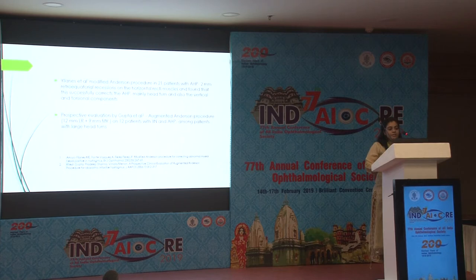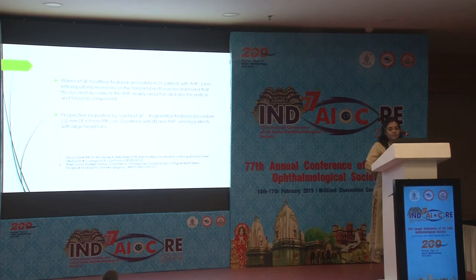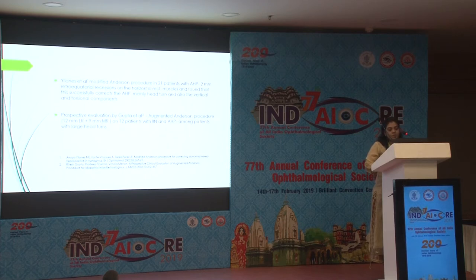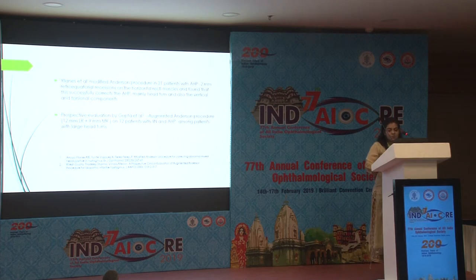A study conducted by Jans et al. using modified Anderson's procedure — that is 2 mm retroequatorial recession of horizontal recti muscles in 21 patients — showed that the procedure corrected horizontal, vertical, and torsional components of the initial AHP. Another prospective study conducted by Gupta et al., the augmented Anderson's procedure with fixed recessions of 12 mm in lateral rectus and 9 mm in medial rectus, was also found to be successful.